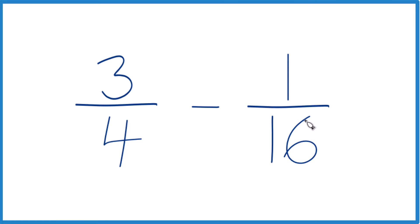The key thing we need to do here is we need to get these denominators to be the same. We have four and sixteen, but if they're the same, then dealing with the numerators is a lot easier.